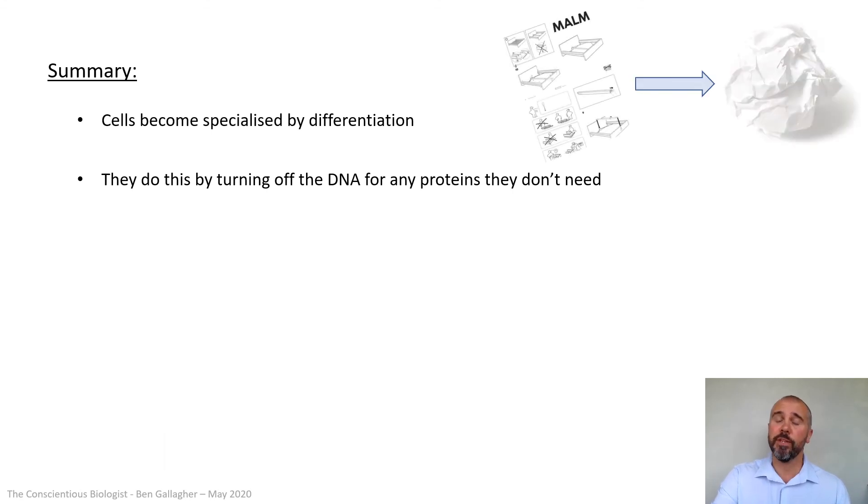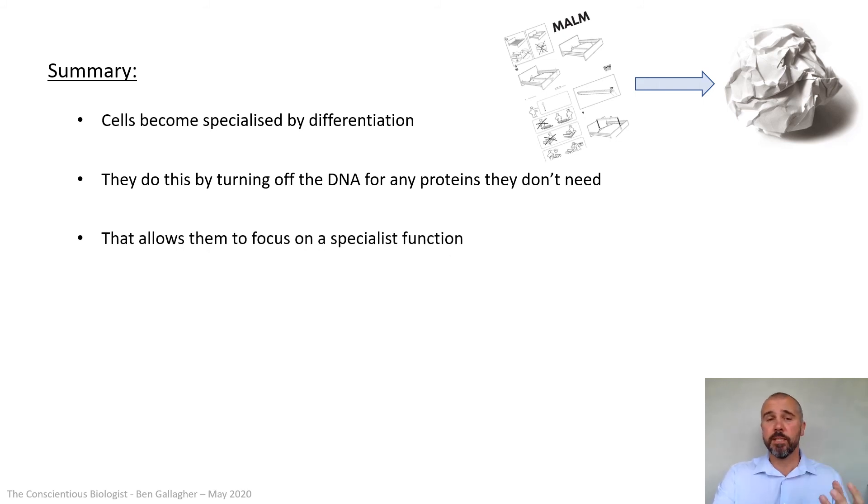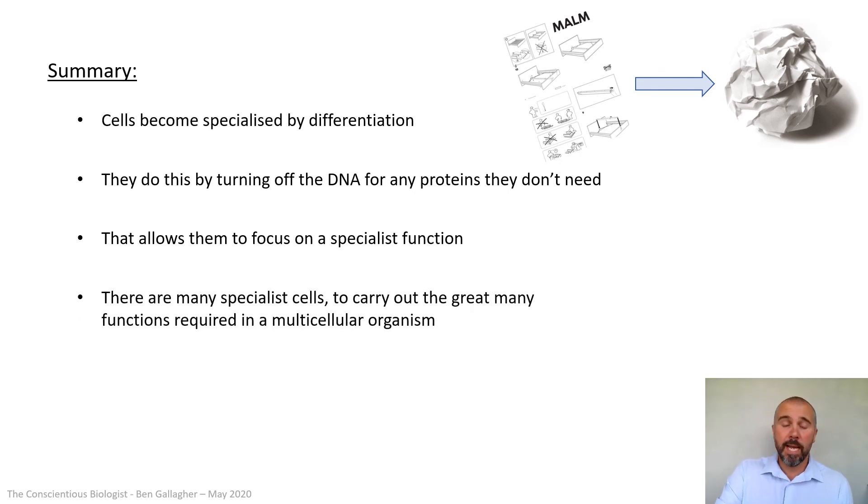So very quick summary of this video then. First one, most important thing from this is that cells become specialized by differentiation. And they do this by turning off the DNA for any proteins they don't need. And this is the nice way to remember that. They screw up the DNA so it can't be read. They only hold on to the bits of DNA that they need to make the proteins that they need. That allows them to focus on a specialist function and do that function really, really well. You imagine if one cell was trying to do everything. If it was trying to make hormones and trying to contract like a muscle cell and trying to swim and trying to do everything. It wouldn't be able to do anything very well if it was trying to do all of it at once. Just like you wouldn't be able to do anything very well if you were trying to do 20 things at once. You need to focus on one. So really differentiation is just about allowing the cell to focus on doing one job really, really well. There's many specialist cells to carry out the great many functions required in a multicellular organism.